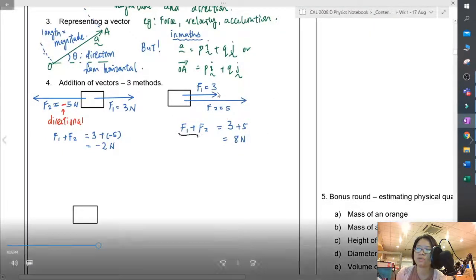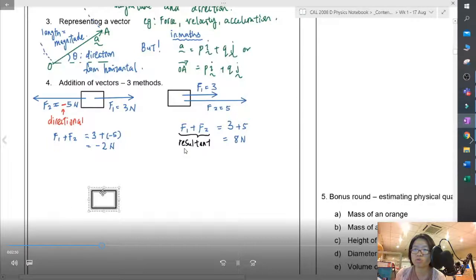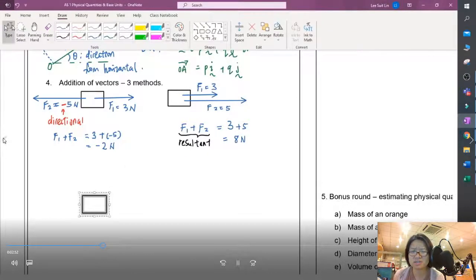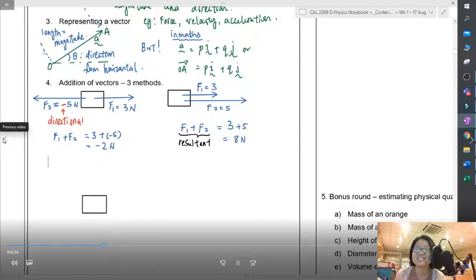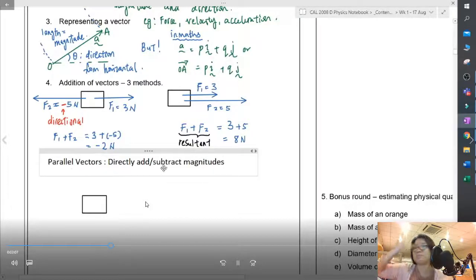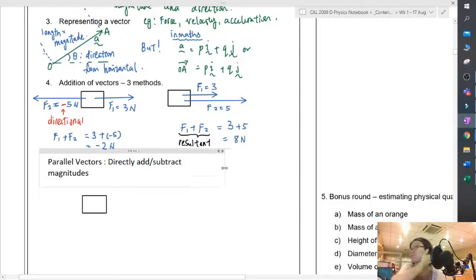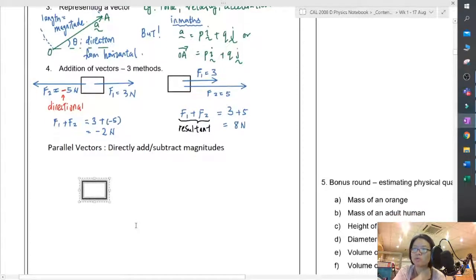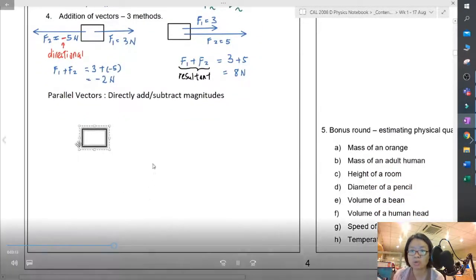When the vectors are in opposite direction, you minus. Same direction, you plus. No problem. But what happens when the vector is not parallel? For parallel vectors, you've got no problem, you just directly add or subtract the magnitudes. The biggest value of F1 plus F2 can be 8 and the smallest one will be 2. But what happens when the vectors are not parallel?